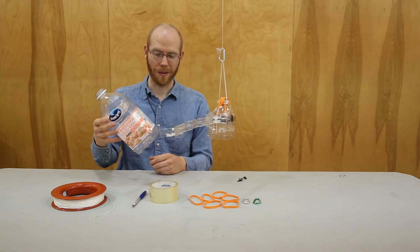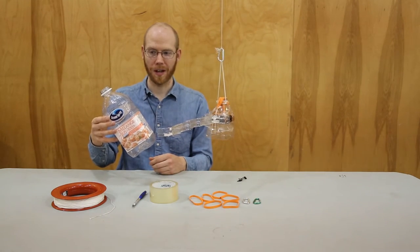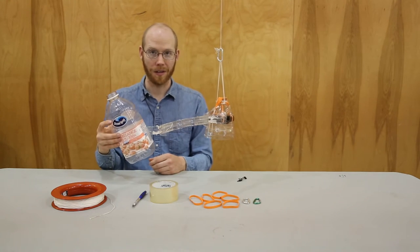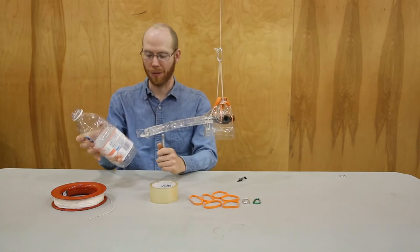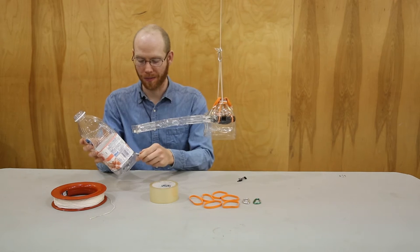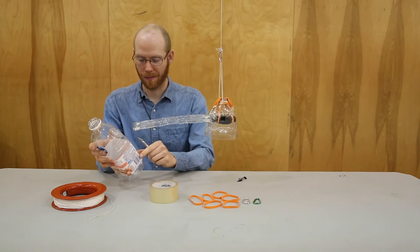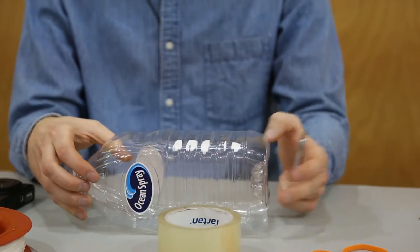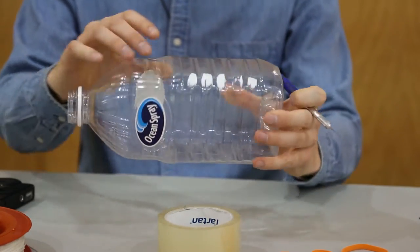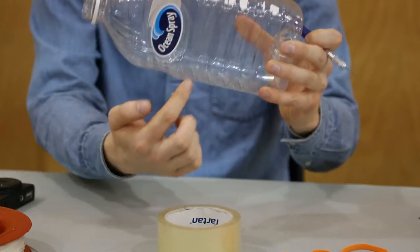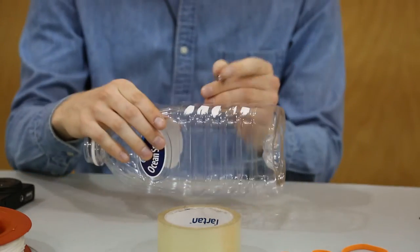This is just a common 64 ounce juice bottle and we're going to start by removing the label and cutting it open. I'm going to start by cutting the bottle at the line of this top section.